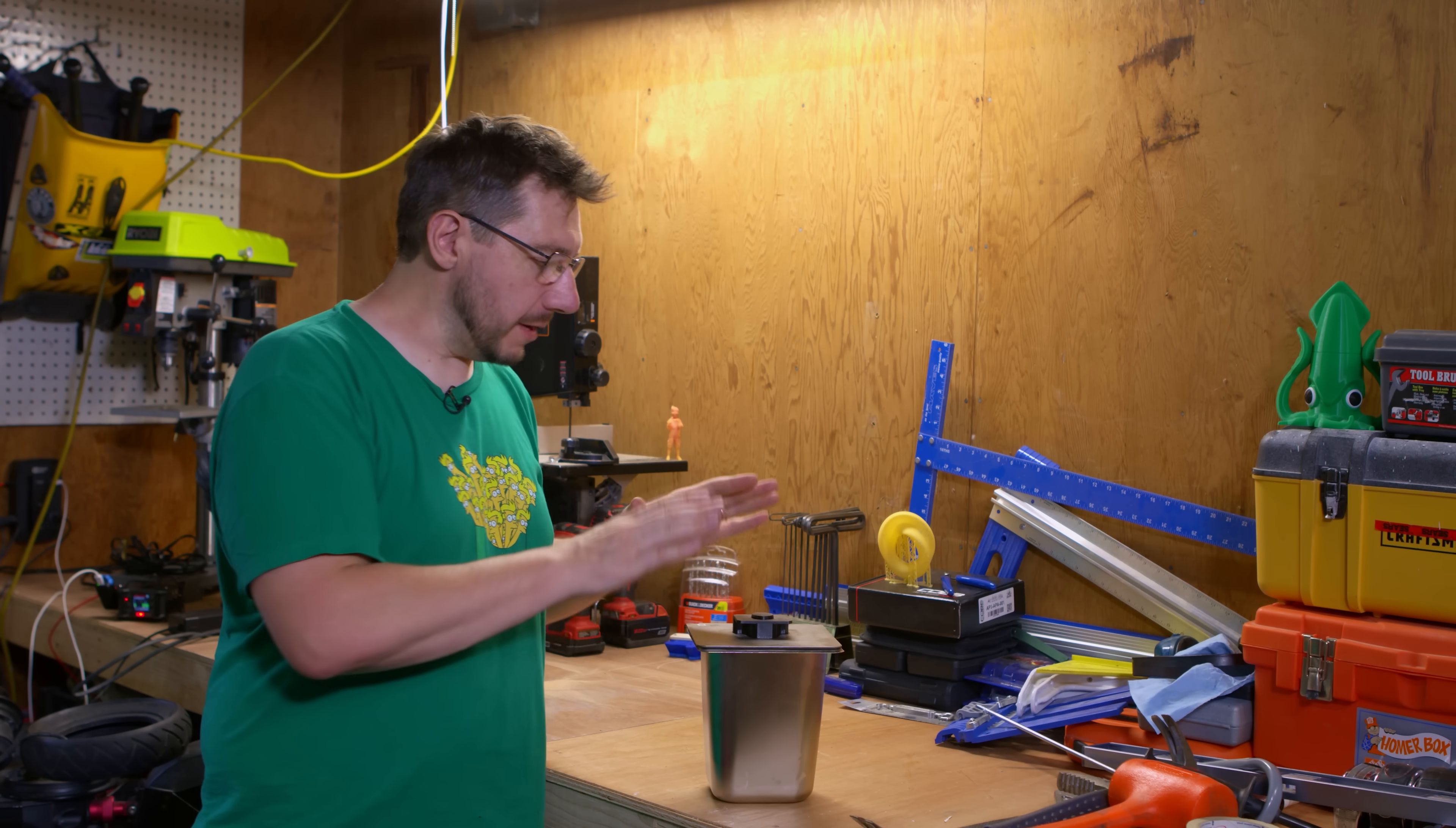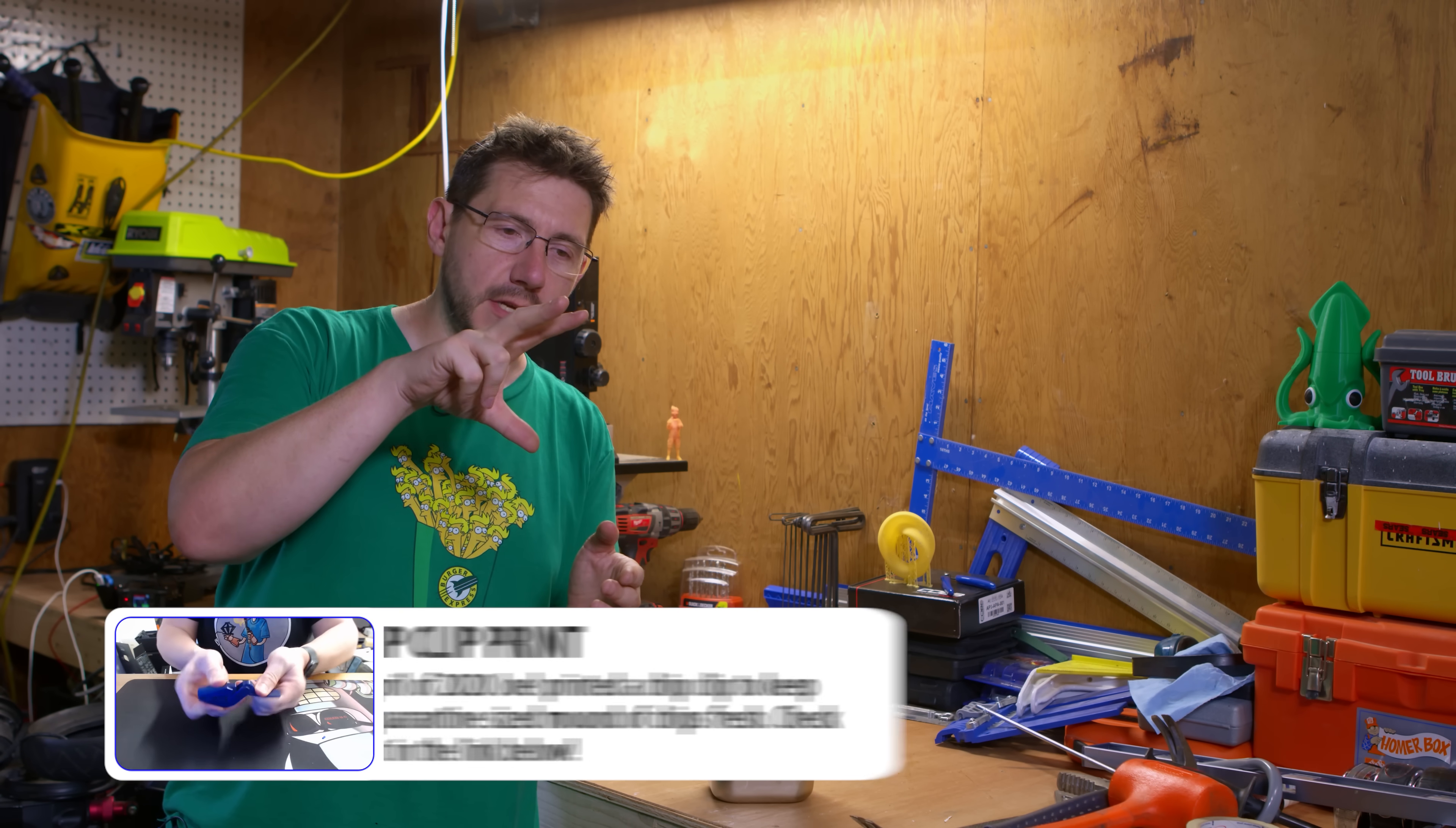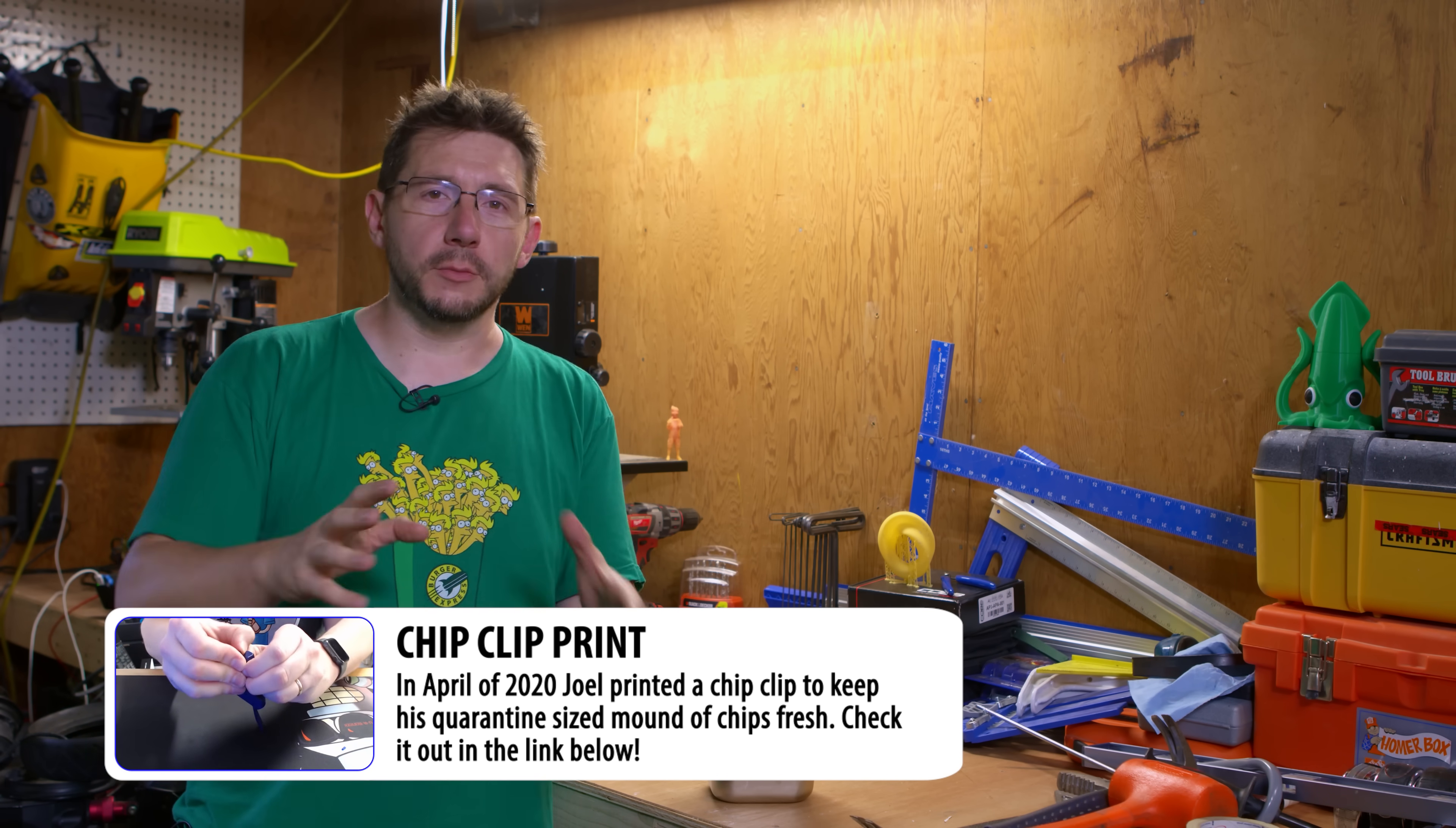On Prusa Printers there is a model called the CW1 Tank Cover. It's interesting because a while ago I featured an episode where we used this print-in-place cam to do a chip clip, and this follows a very similar principle.